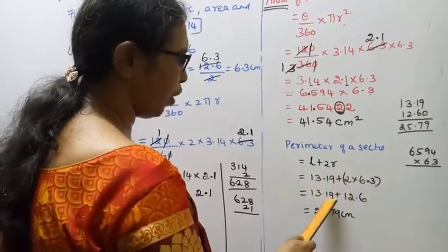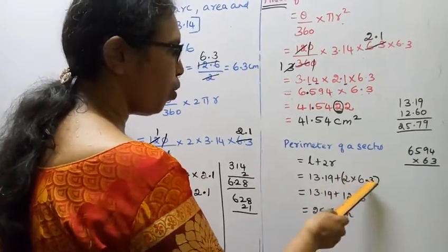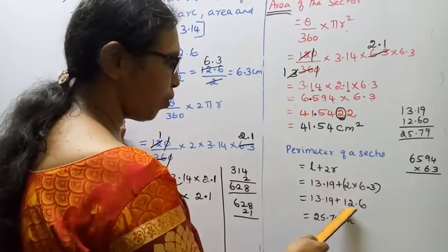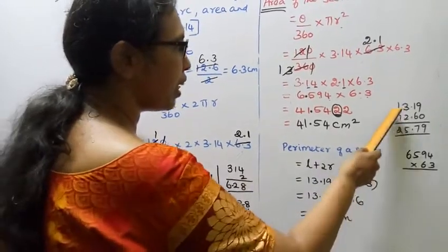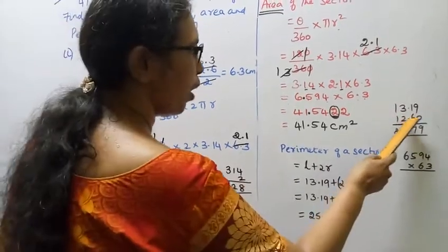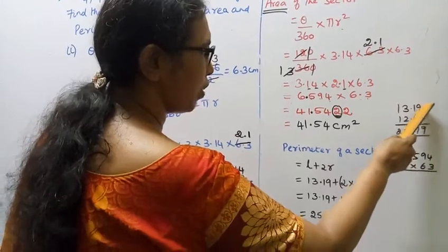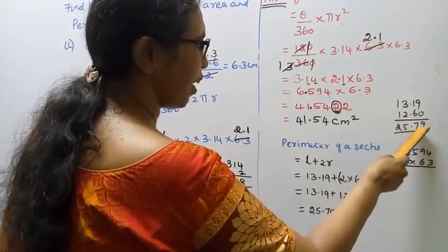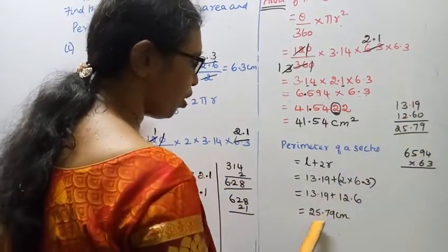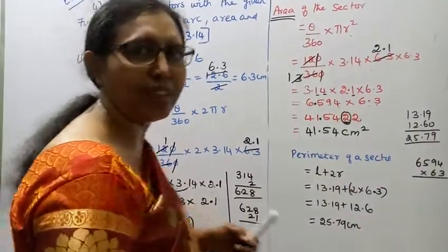So perimeter equals 13.19 plus 2 times 6.3, which gives 13.19 plus 12.6. Adding: 0.9 plus 1 is 1.9, then 1 plus 6 is 7, giving 0.79. Then 3 plus 2 is 5, and 1 plus 1 is 2. Therefore the perimeter of the sector is 25.79 centimeters.